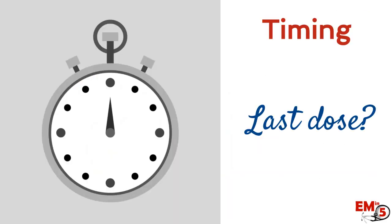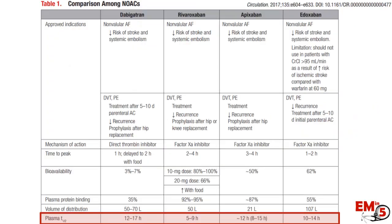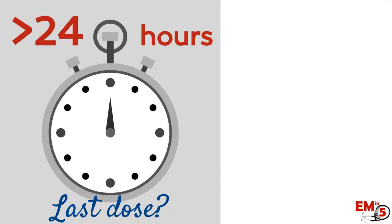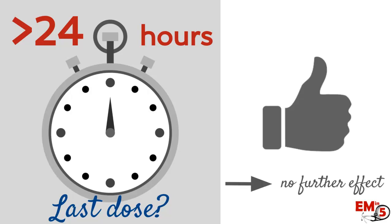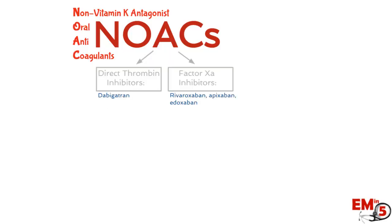The last really important thing for NOACs is to determine the last dose the patient took. These all have a very short half-life, about 12 hours on average. So if it's been more than 24 hours since the patient took their last dose, we can pretty much assume there's no further anticoagulant effect in the system.